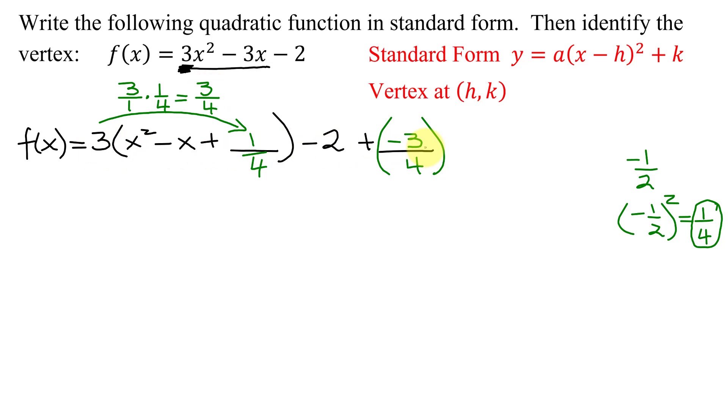I've not changed the value of this expression. I have just changed the way it looks. Now simplifying this expression, I'm going to get 3(x with some number)². This was a perfect square trinomial. I could factor it.